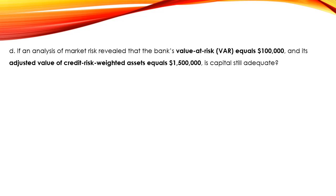Question D: if an analysis of market risk revealed that the bank's Value at Risk (VaR) equals $200,000 and its adjusted value of credit risk-weighted assets equals $1.5 million, is capital still adequate? When talking about market risk, VaR, and adjusted credit risk, we are moving to Basel 2 requirements.